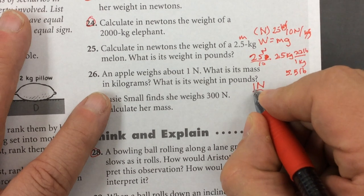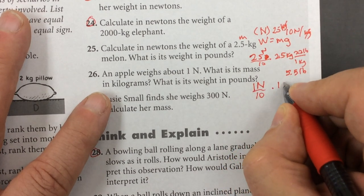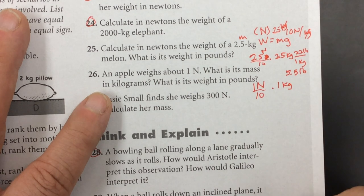So this would be 1 newton divided by 10, will give you 0.1 kilograms. 0.1 kilograms.